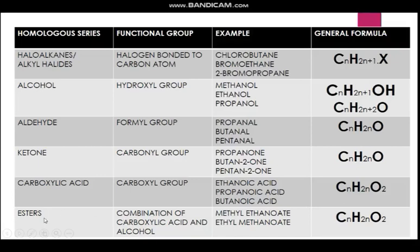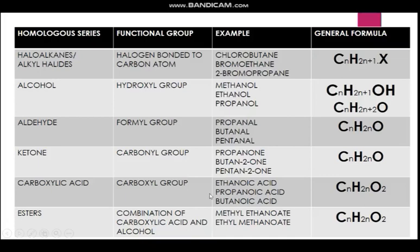The last one is esters, which is actually a combination of an alcohol and a carboxylic acid. For example, methyl ethanoate comes from methanol and ethanoic acid. From the alcohol methanol, you remove the '-anol' and add '-yl', giving methyl. From ethanoic acid, you remove the '-oic acid' and add '-oate', giving ethanoate. So the combination becomes methyl ethanoate. Similarly, ethyl ethanoate is a combination of ethanol and ethanoic acid. The general formula is the same as carboxylic acid.